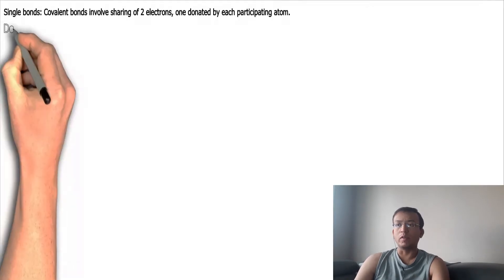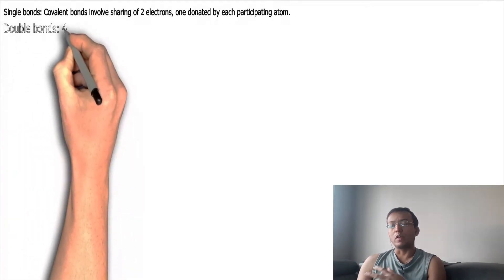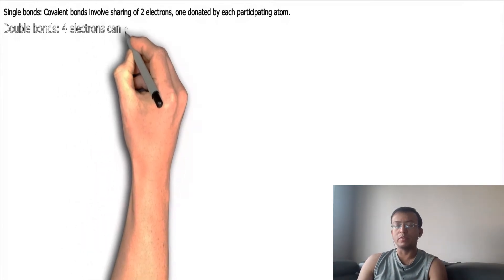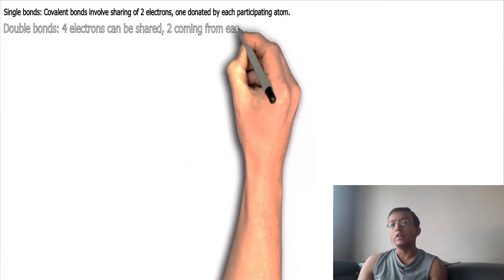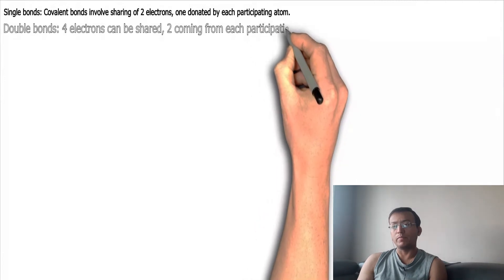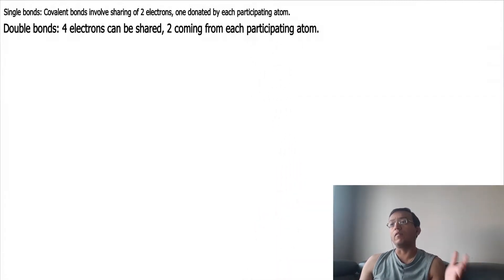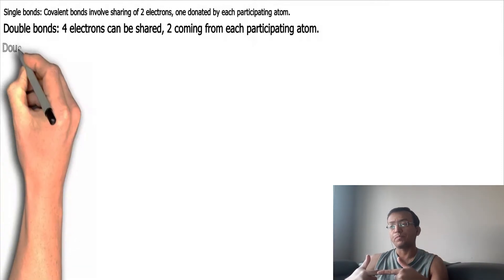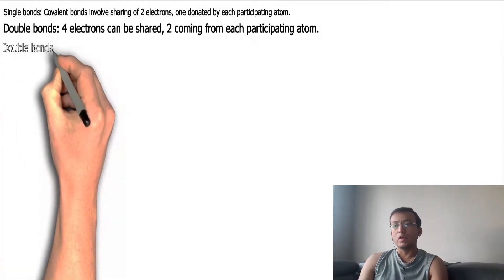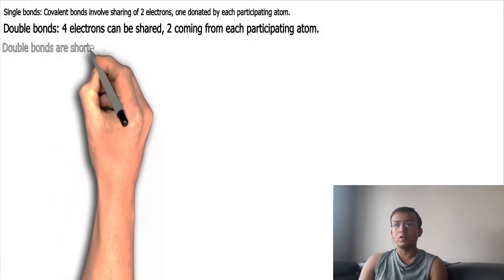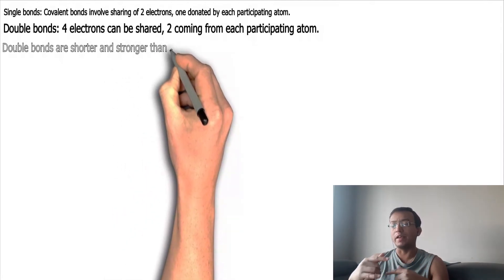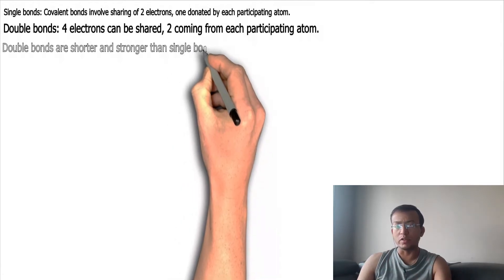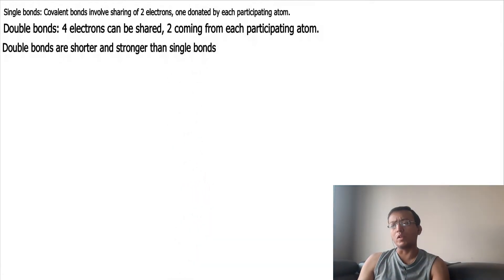There are different types of covalent bonds. In a single covalent bond, one electron is donated by each participating atom. In a double bond, four electrons are shared — two from each participating atom. Double bonds are shorter and stronger than single bonds, and they also restrict rotation, whereas single bonds can rotate freely.